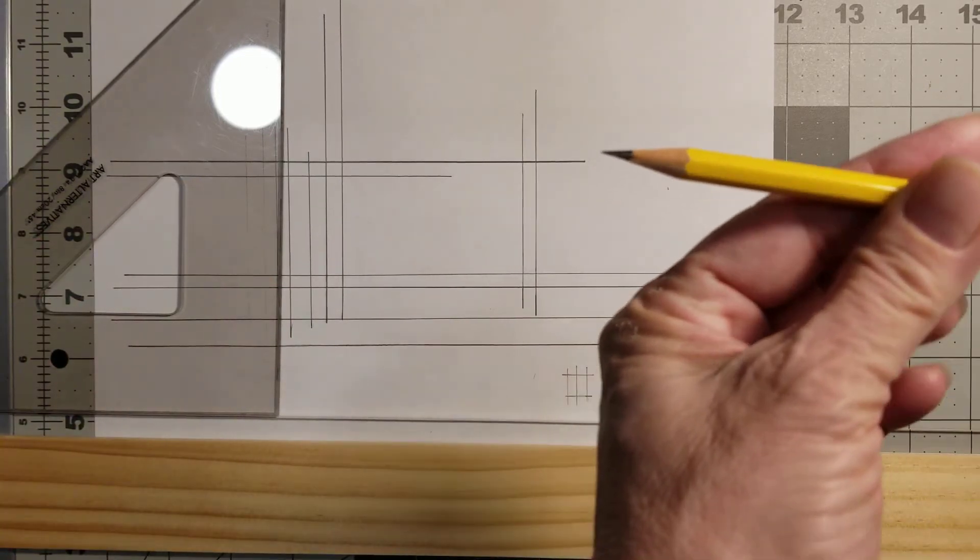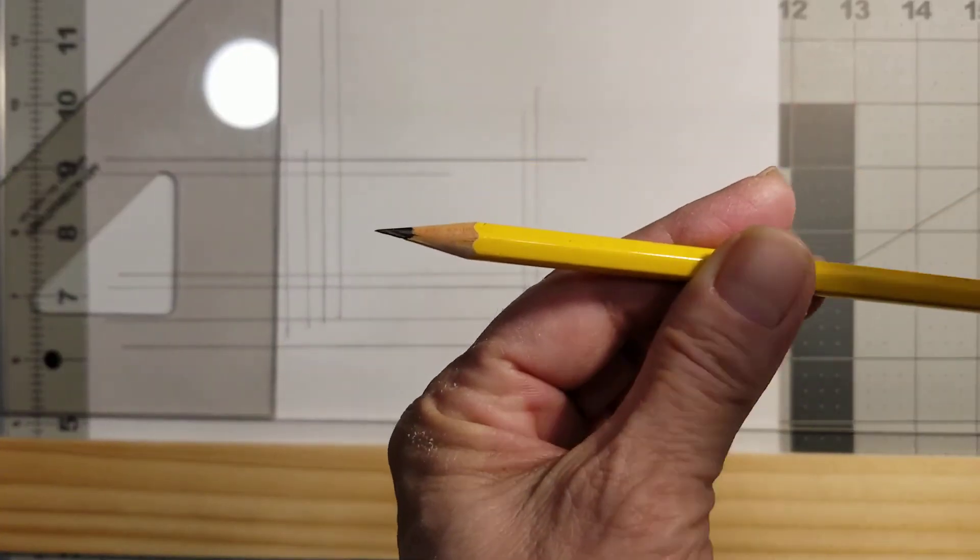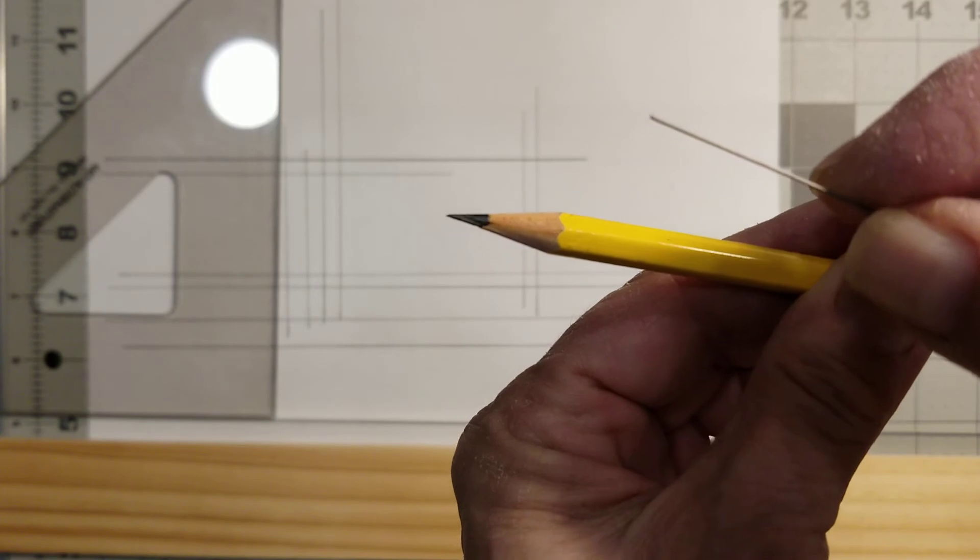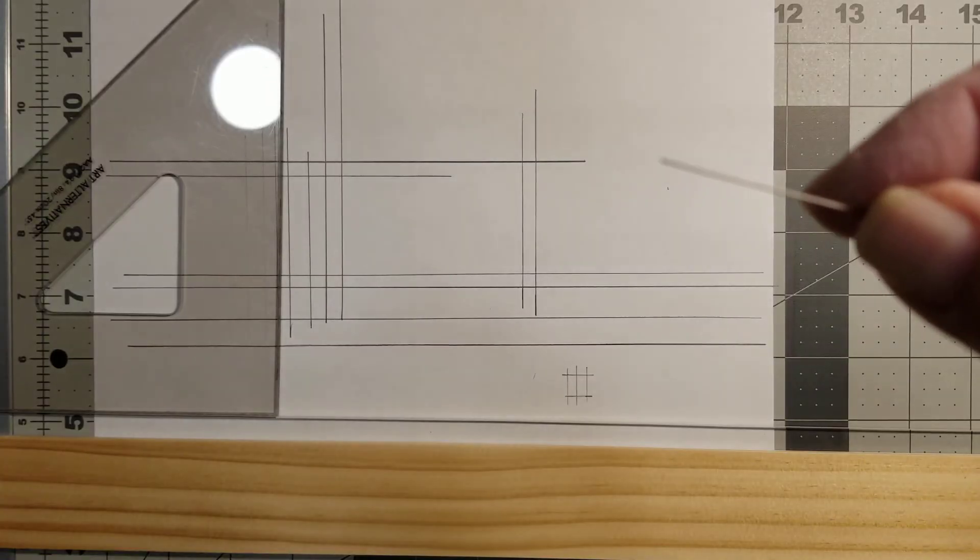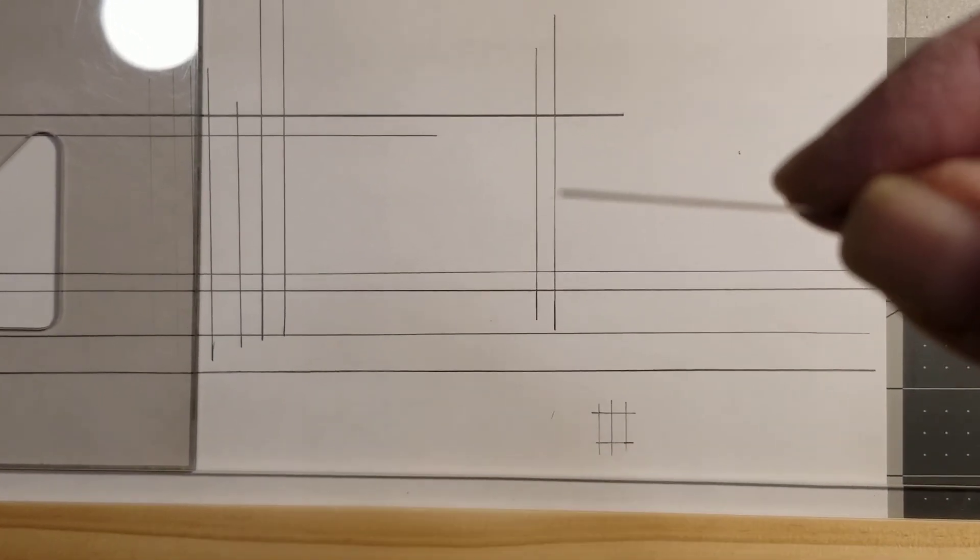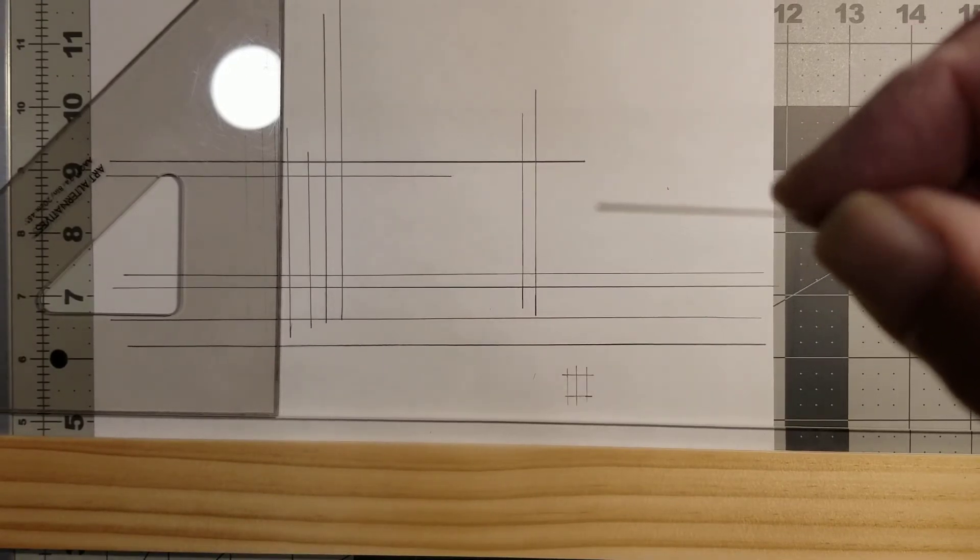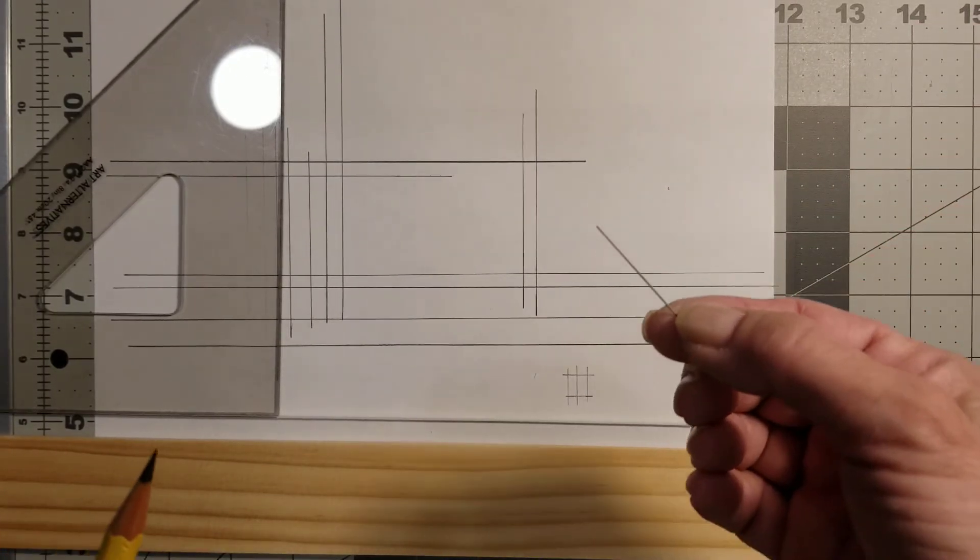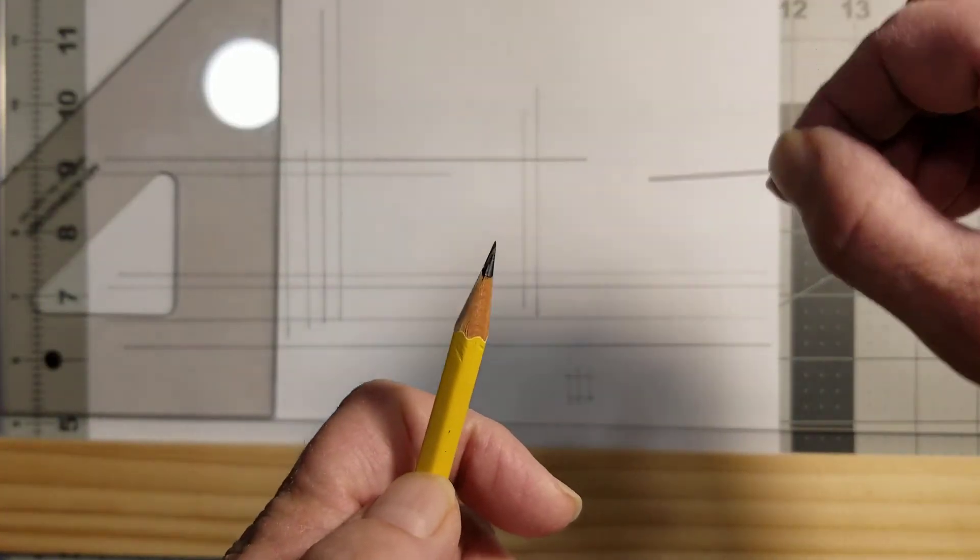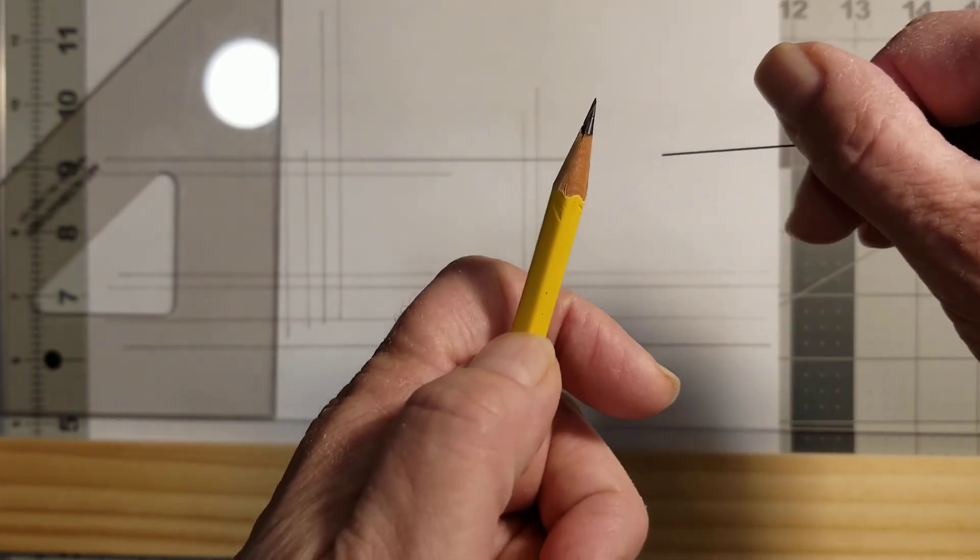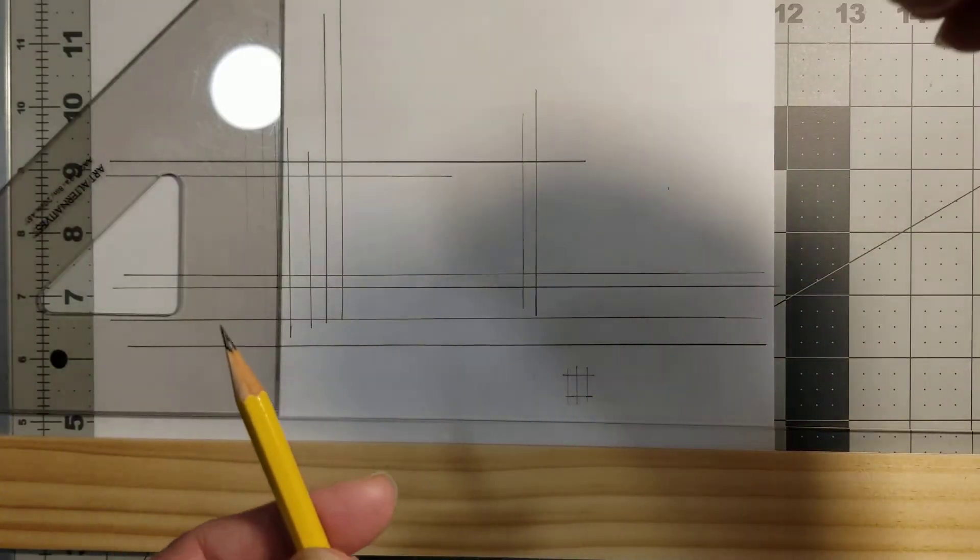When you get the lead from your mechanical pencil, the end of your lead—if you were to take a piece of lead out of your case, you would see that the end is flat. So it comes flat. We're constantly wanting to turn this lead in our pencil so that we can recreate this cone shape while we're drawing.